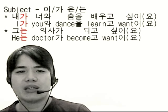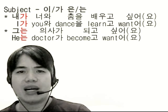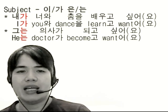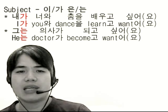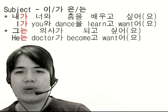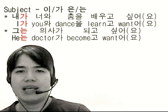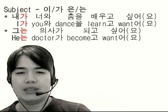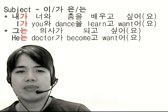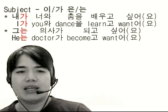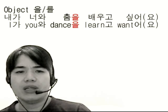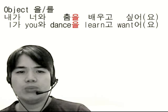Okay, let's look at marking particles one by one. Subject marking particles are 이, 가, 은, 는. And 은/는 are known to be topic marking particles. In our examples, 가 in 내가 and 는 in 그는 are subject marking particles. Object marking particles are 을, 를. In our example, 을 in 춤을 is an object marking particle.